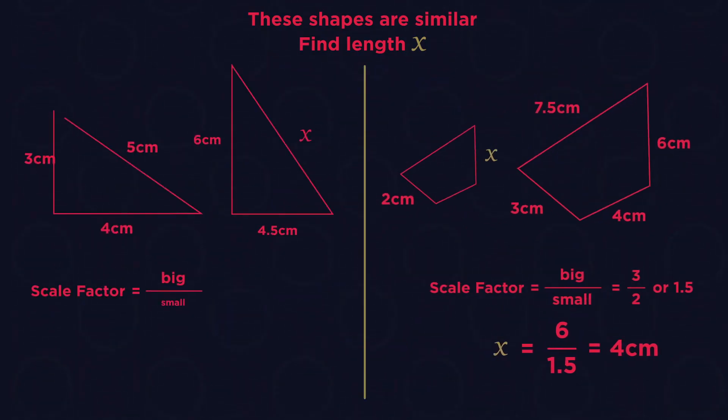So to find a bigger length, multiply by the scale factor. And to find a smaller length, divide by the scale factor.